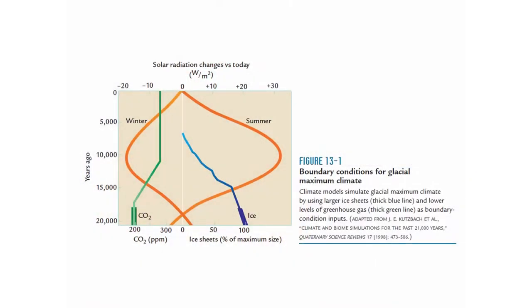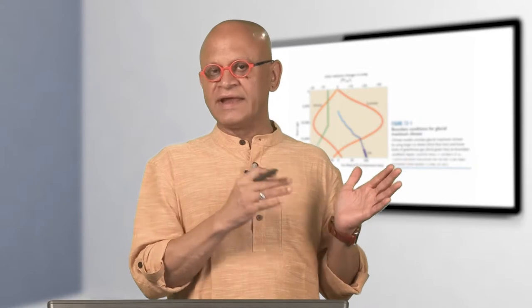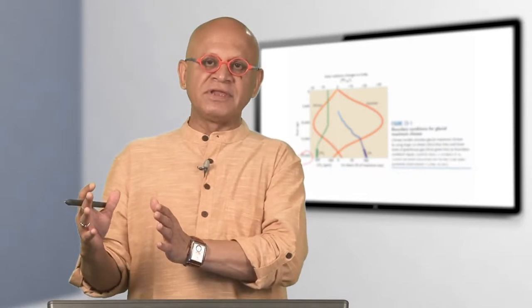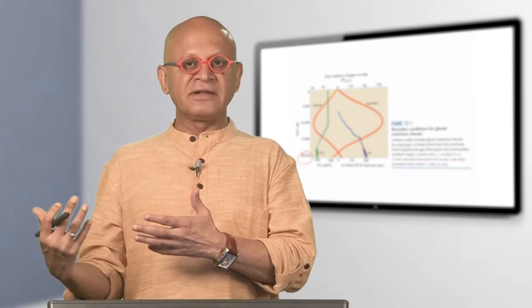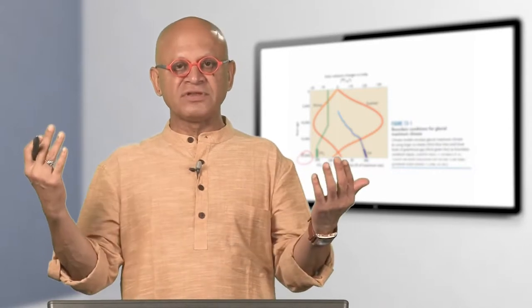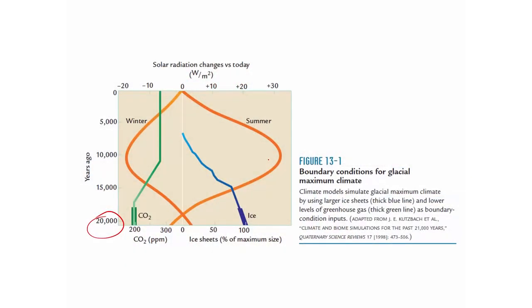What is the deglacial time? Essentially, we go back to the end of the last ice age, which was around 20,000 years ago. The last ice age started about 120,000 years ago and ended about 20,000 years ago, and we are technically in a deglacial period — meaning the extensive glaciers are no longer on the continents, though glaciers still exist on Antarctica, Greenland, and some mountains.